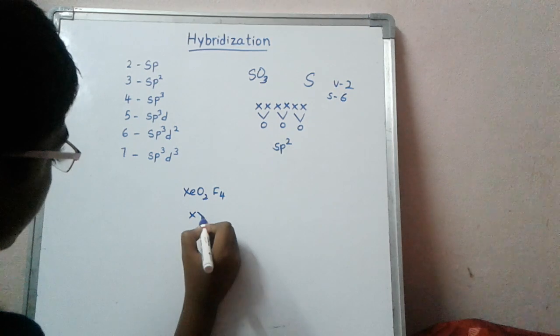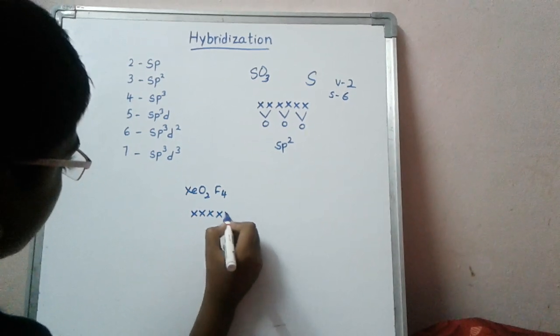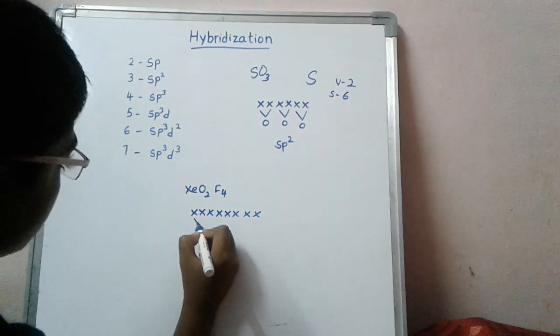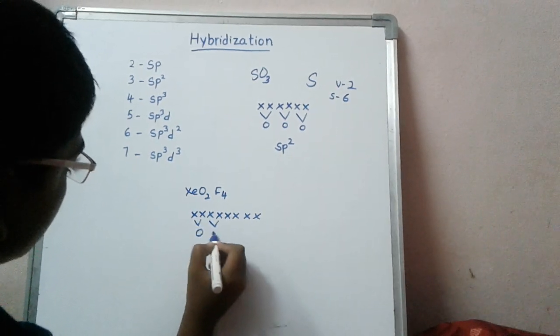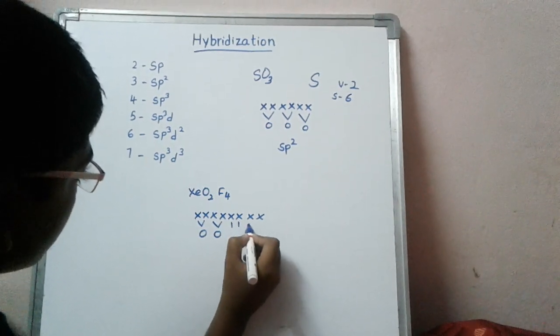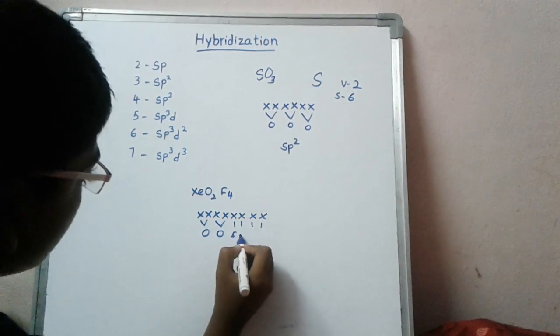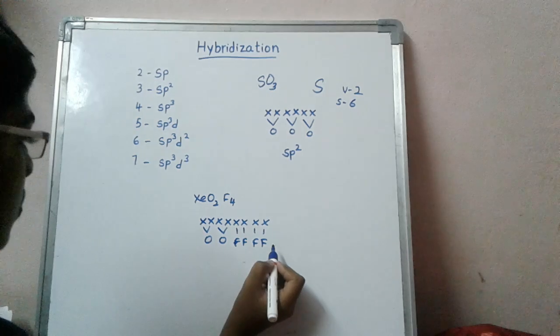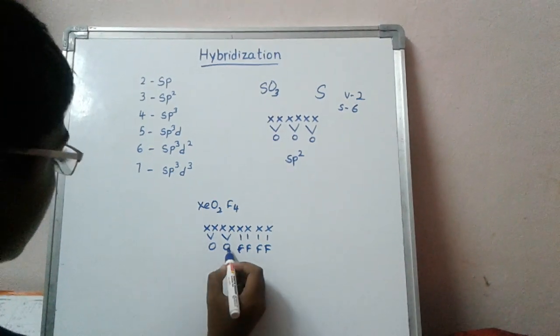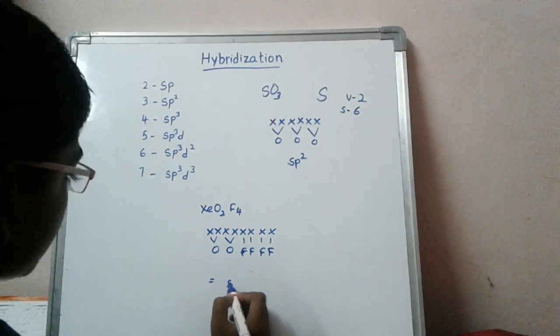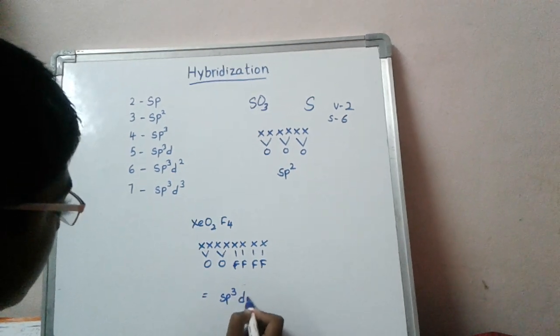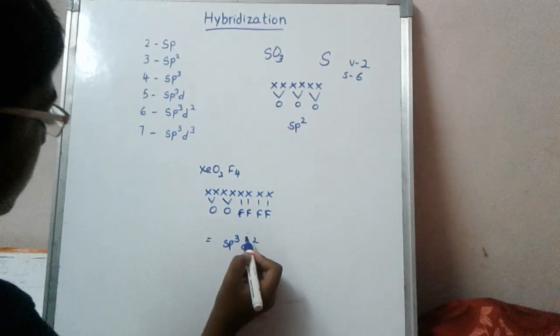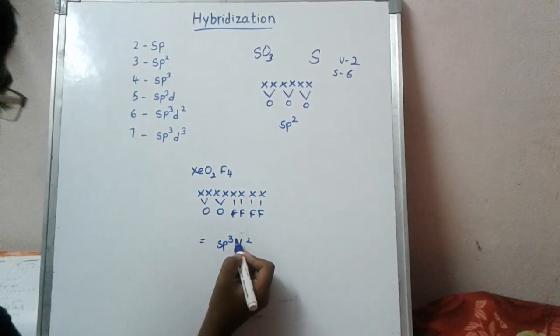Number of oxygen is 2, number of fluorines are 4. So here we can find the hybridization sp3d2. In this way you can find the hybridization of any molecule.